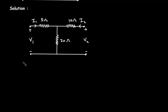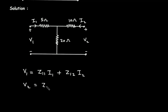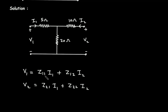First we will write the Z parameter expressions. The Z parameter expression is: V1 = Z11·I1 + Z12·I2, and V2 = Z21·I1 + Z22·I2. These are the Z parameter expressions, where the coefficients of I1 and I2 — that is Z11, Z12, Z21, and Z22 — are the Z parameters we need to find.